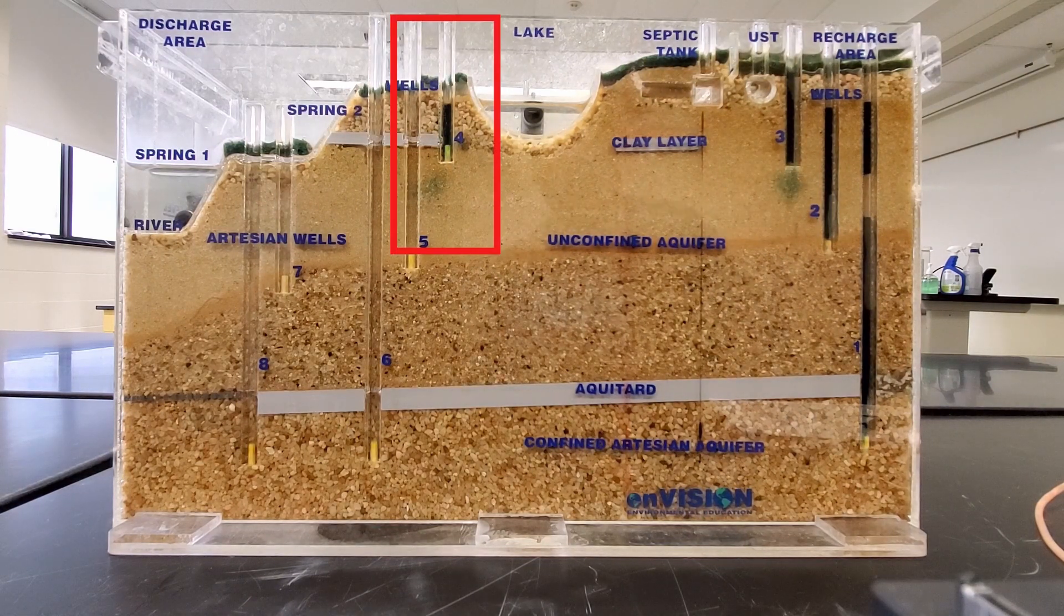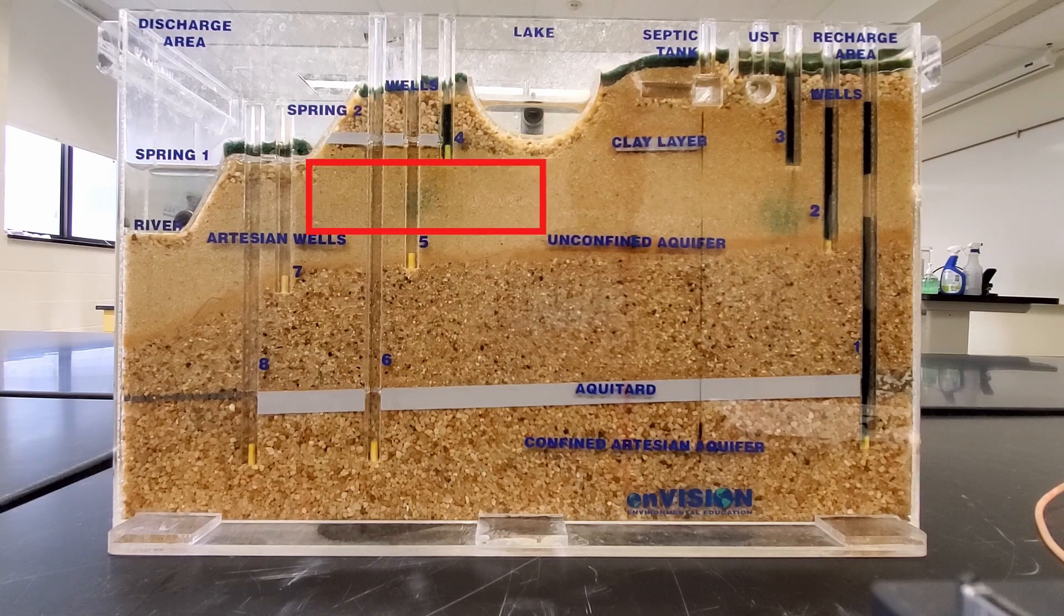After the dye is added to well 4, it spreads through the well and into the sediment. Because the well is in the clay layer, it does not spread very far.